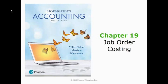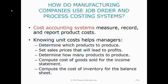Hello everyone. In chapter 19 we're going to be talking about the way that manufacturing firms of a certain type use a costing system called job order costing to keep track of their flow of inventory costs.